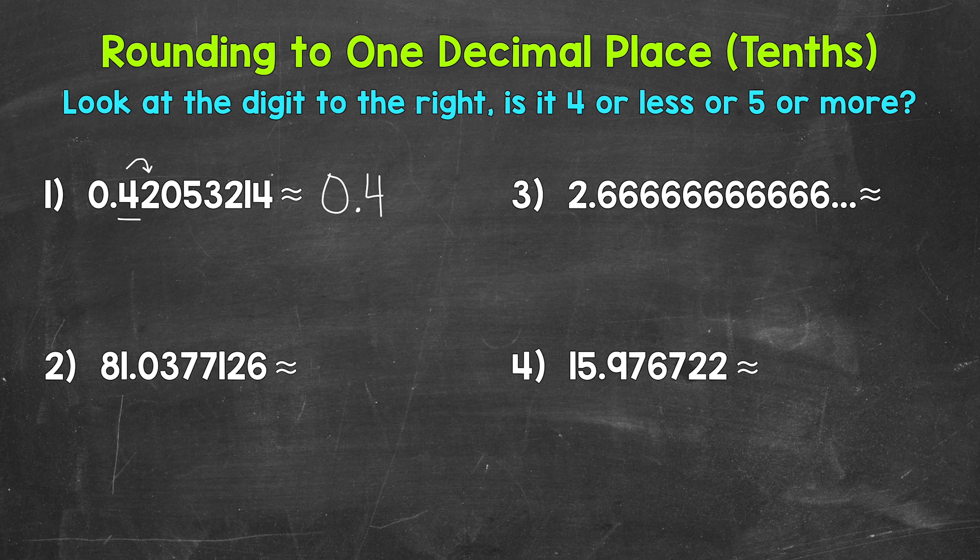We can think of this as cutting the decimal off after one decimal place, so after the tenths place. We do this by rounding. Our original decimal is approximately, or rounds to, four tenths. This is the approximate sign. We use that because four tenths isn't exactly equal to our original decimal. We rounded. We have an approximate decimal, so we use that sign to represent that.